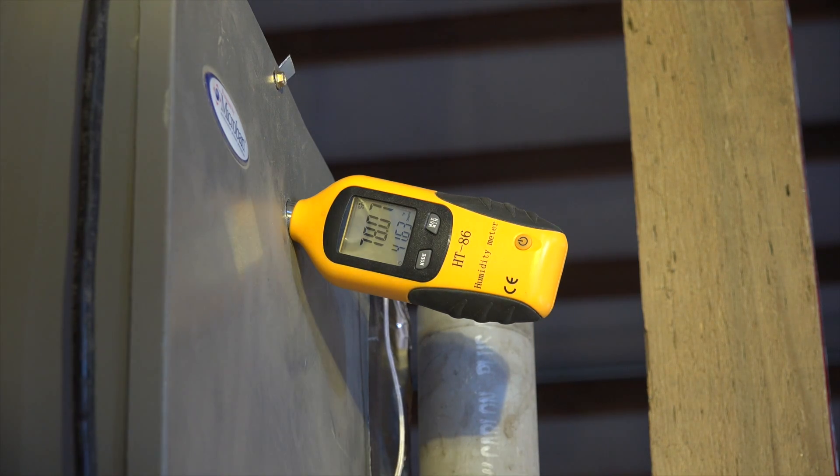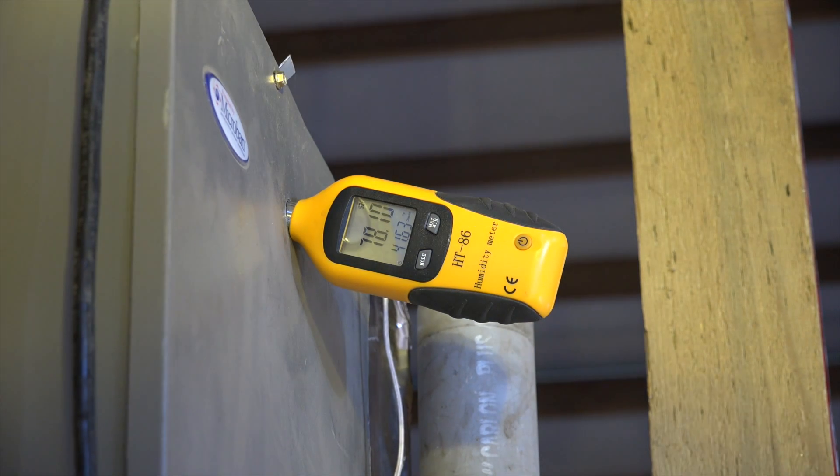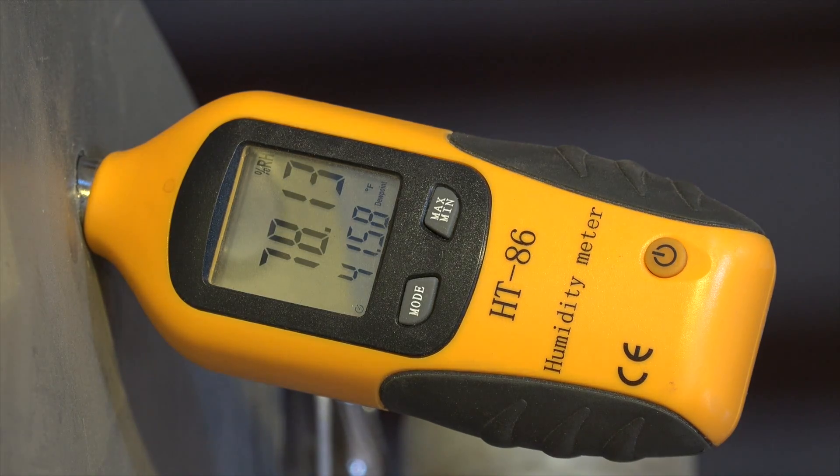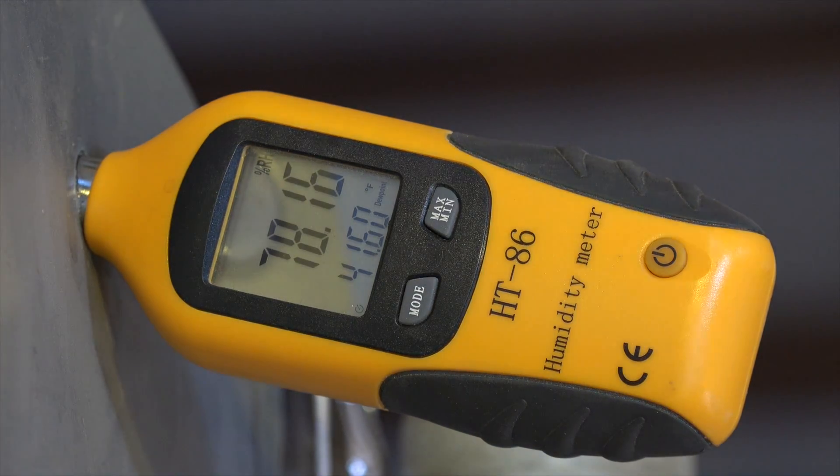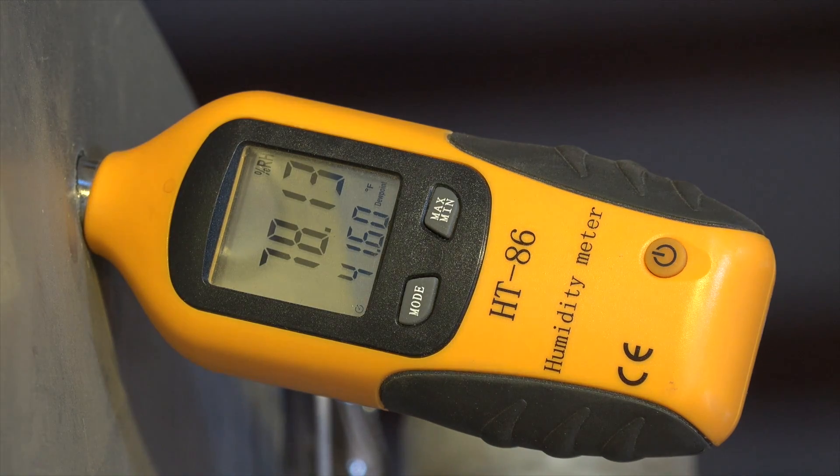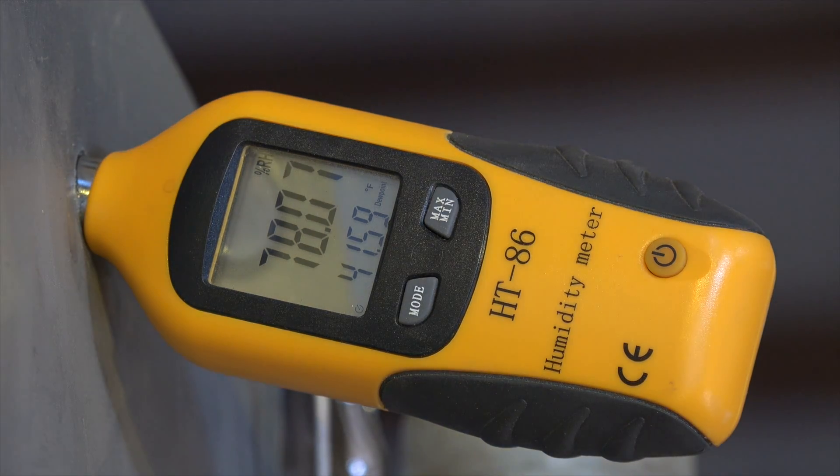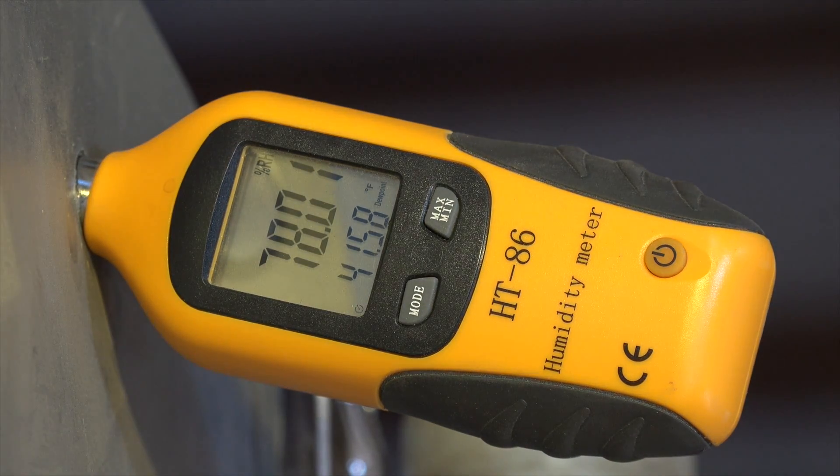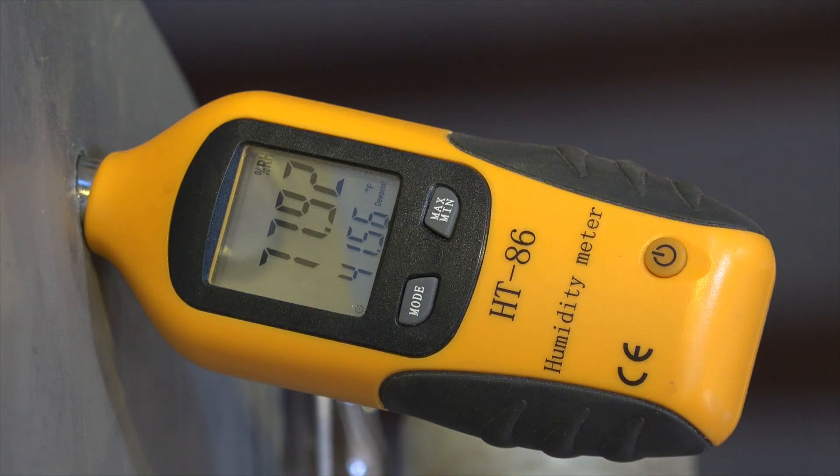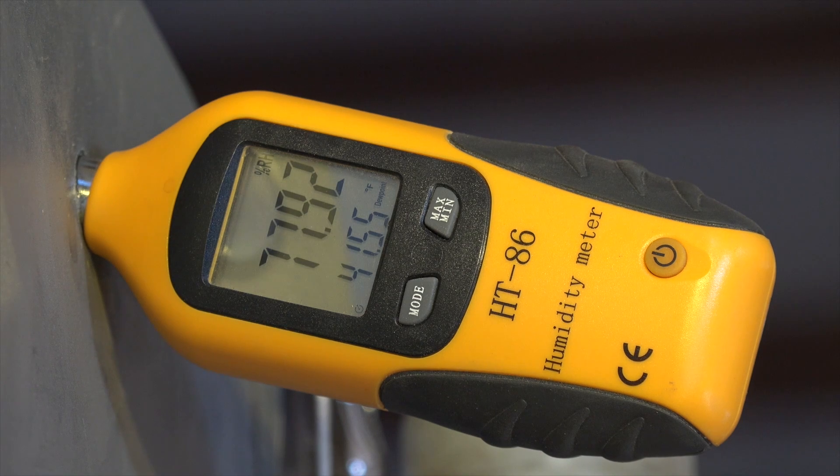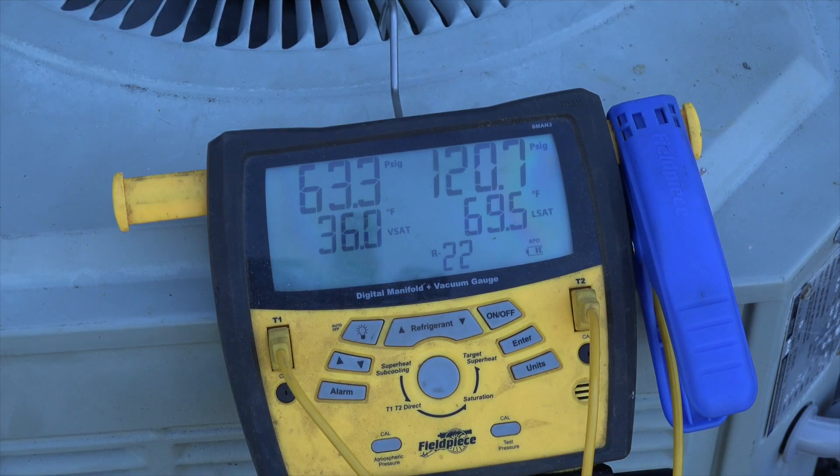Okay, here we are with our humidity gauge again. I've got 78% relative humidity now. My dew point is 41.59 Fahrenheit. Now let's take a look at the duct temperature leaving the coil.